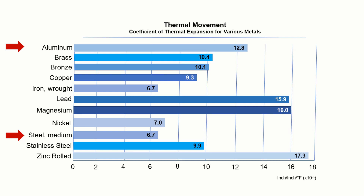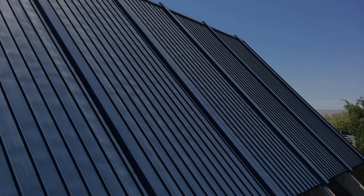That's a lot of movement taking place on the roof. If it is not accounted for, serious damage can take place. The panels can tear the seams apart, fail at the fastener locations, or give an unsightly appearance that is often blamed on oil canning, but is actually buckling of the roof panels.